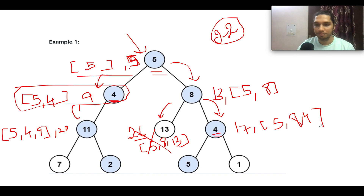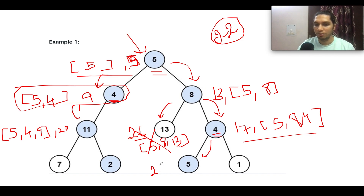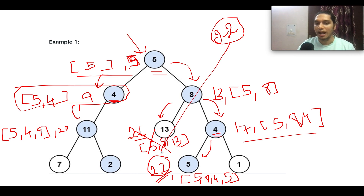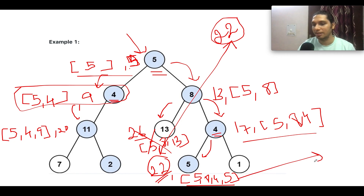We have two child nodes here. For the first one with value 5: 17 plus 5 gives 22, so the running sum gets updated to 22. The running list is [5, 8, 4, 5]. The running sum equals the target value, meaning we've found one valid answer. This path [5, 8, 4, 5] gets added to our answer list.